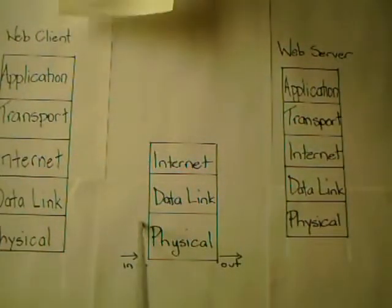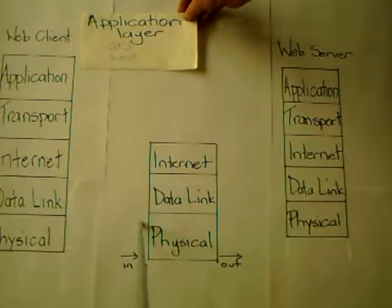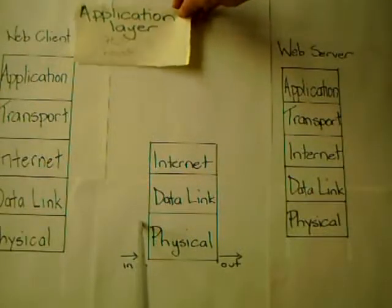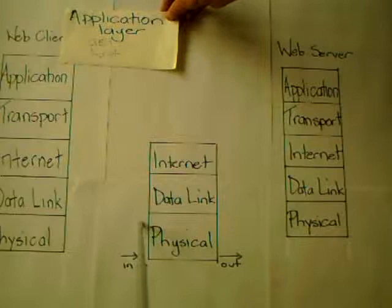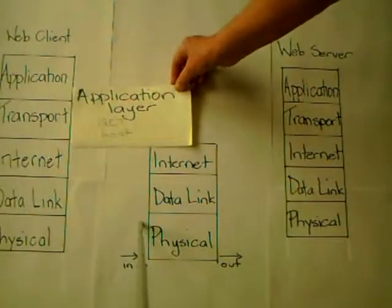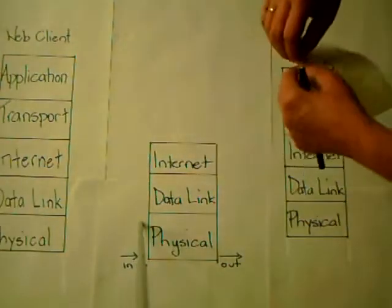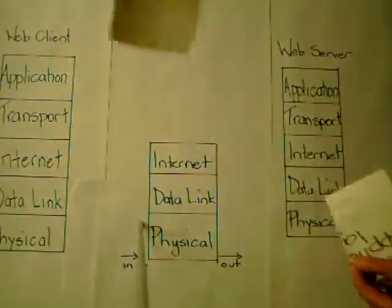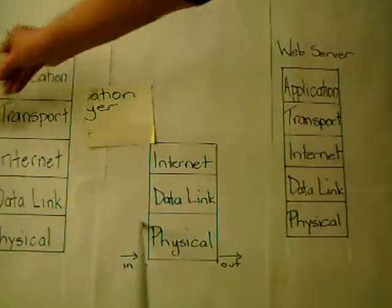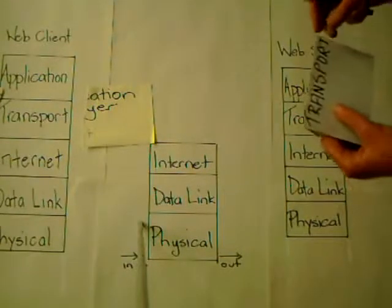We've got our GET and our host, and that is passed down from the application layer on the web client through to the transport layer. Once it gets to the transport layer, it's in data format and it's too large, so it is separated into segments.